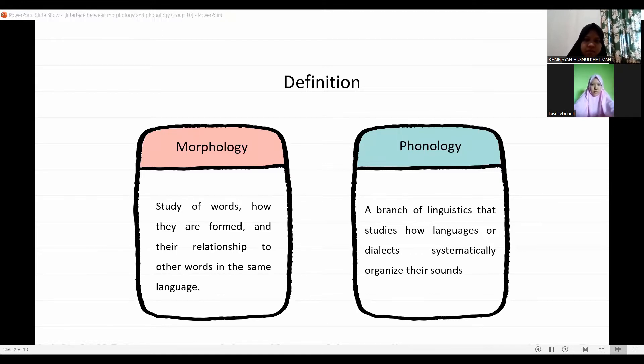Morphology is the study of words, how they are formed, and their relationship to other words in the same language. It analyzes the structure of words and parts of words such as stems, root words, prefixes, and suffixes.